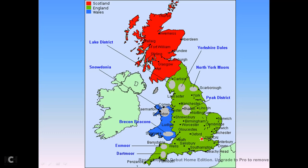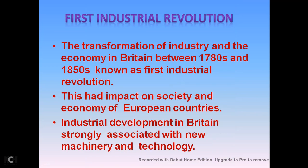The first Industrial Revolution refers to the transformation of industry and the economy in Britain between the 1780s and 1850s. We saw changes in the industries and in the economy of Britain, and this had an impact on the society and economy of European countries.